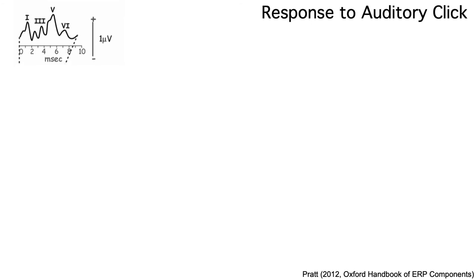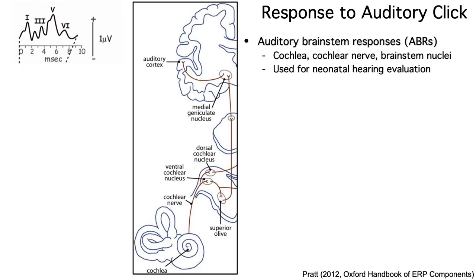Auditory stimuli generate a very different pattern of sensory ERP responses. Whereas the first visual ERPs start around 50 milliseconds, you can see auditory ERPs within about a millisecond — the auditory system is way faster than the visual system. The initial auditory ERPs come from the brainstem and are called the auditory brainstem responses or ABRs. They are the one common exception to the rule that ERPs are ordinarily generated by cortical pyramidal cells.